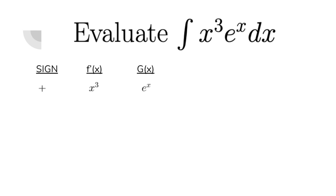Hence, we can come up with the first line, which is just the positive sign because you always start off with the plus, then x cubed for f of x, the f prime which we'll repeatedly take, and then e to the power of x for the g column.